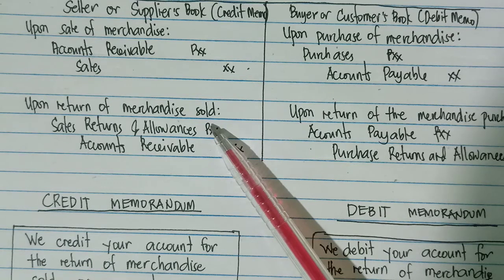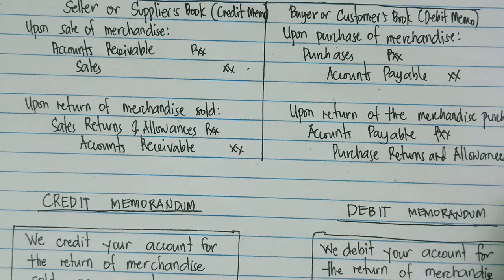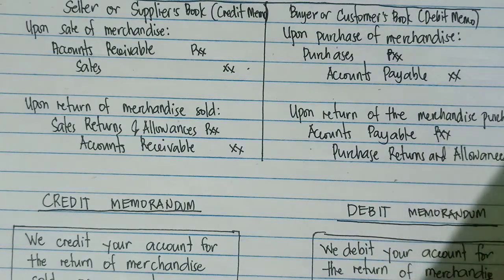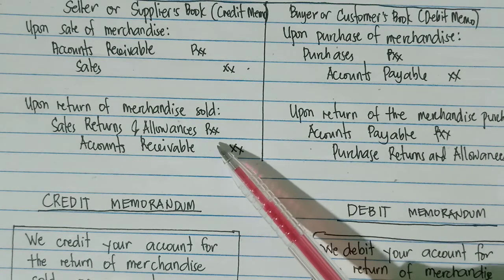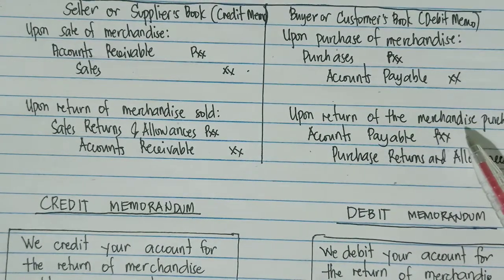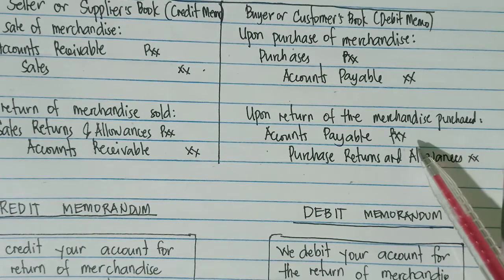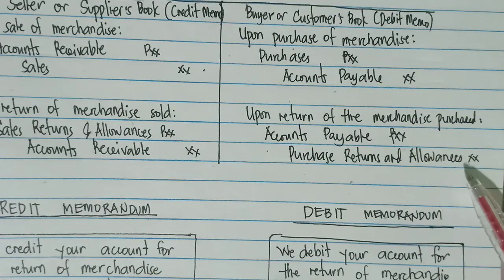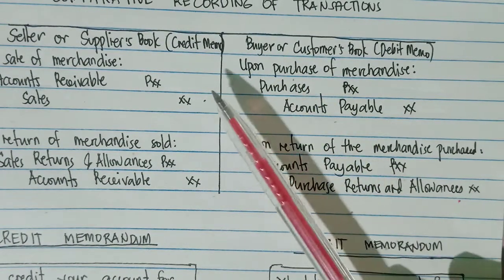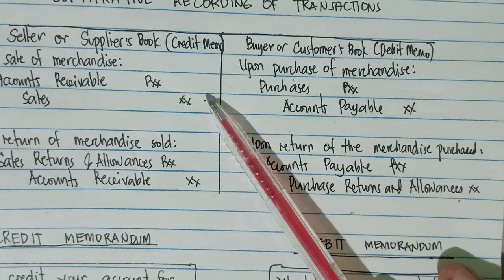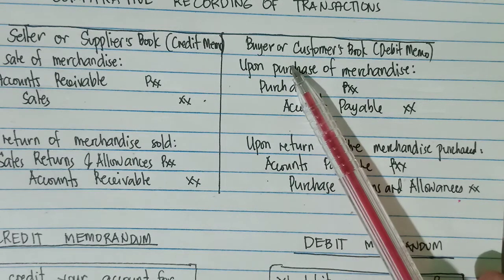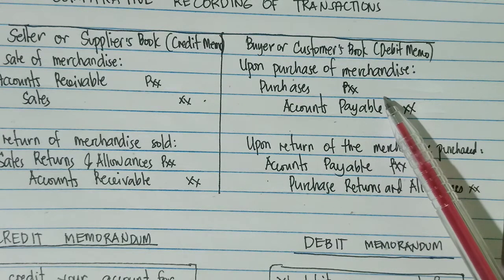That is the difference between the two books. When there is a return of merchandise sold, in the seller's book we debit sales returns and allowances and credit accounts receivable. Upon return of merchandise purchased, in the buyer's book we debit accounts payable and credit purchase returns and allowances. Look carefully at the difference in recording between the seller or supplier's book and the buyer or customer's book.